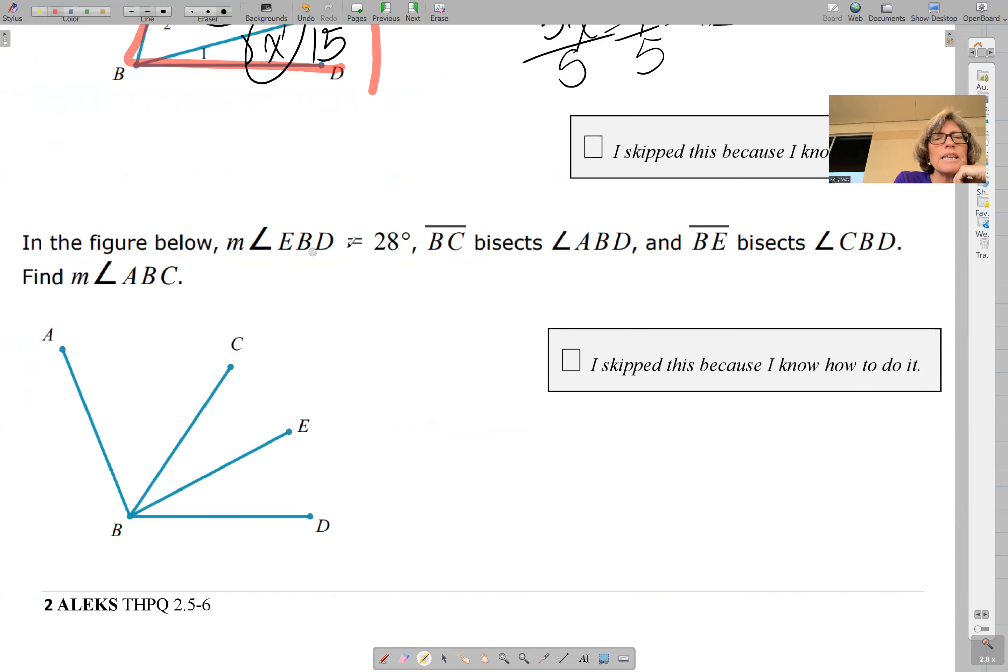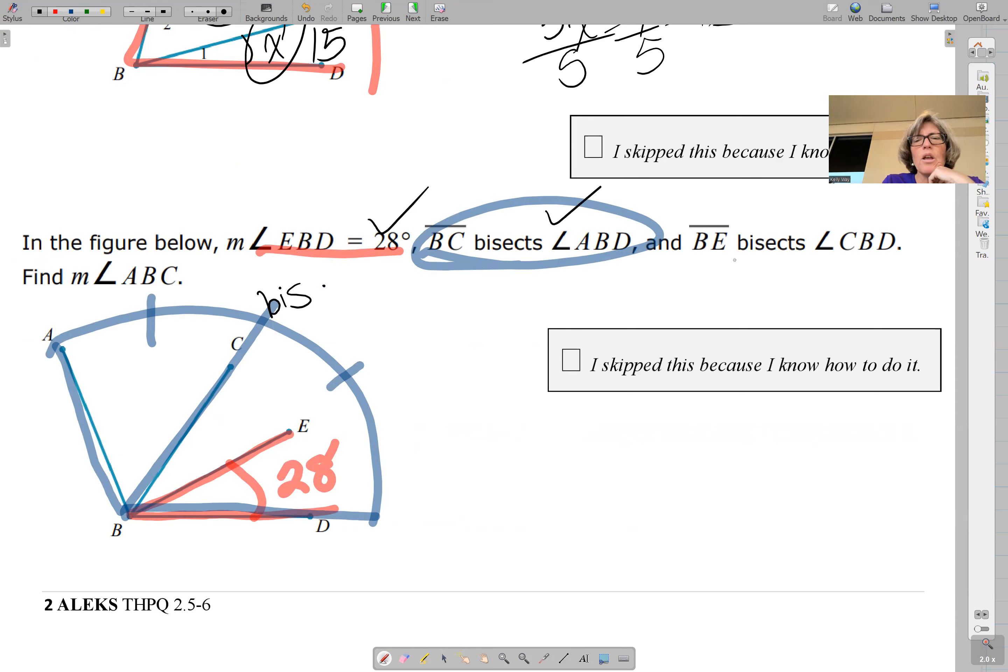We've got some information here. Angle EBD is 28. BC bisects angle ABD, so BC bisects ABD. That means those are congruent because of the bisector. BE bisects CBD. So CBD is being cut in half. Sweep it this way as well.